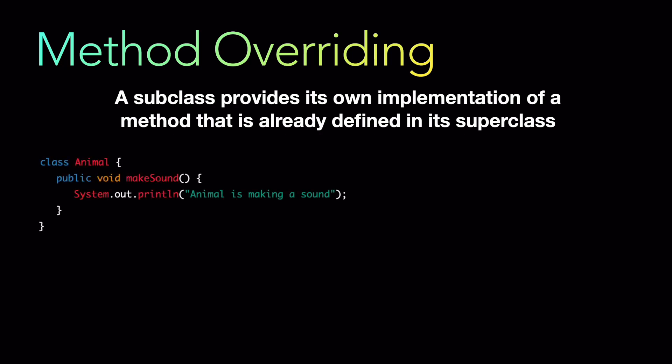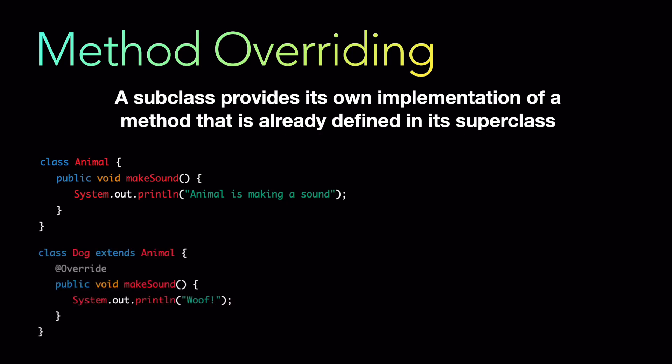Let's take another example. We have a class called animal with a method makeSound, which prints 'animal is making a sound.' Now if we have a subclass dog that extends the animal class, by default it inherits the makeSound implementation. But for dog, we want to change that behavior. So we override — using the @Override annotation — the makeSound method, changing the implementation to print 'woof.' This is called method overriding: we are overriding the makeSound method that is already defined in the superclass animal.